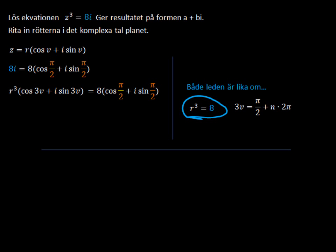We need to first look at this here. r cubed, that's going to be the distance from the origin, and it's going to be 8. So already you can see it's going to be 2, because 2 times 2 times 2 is 8. And if 3 times whatever angle is is going to be equal to the pi over 2, then obviously a single v would be a third of that.